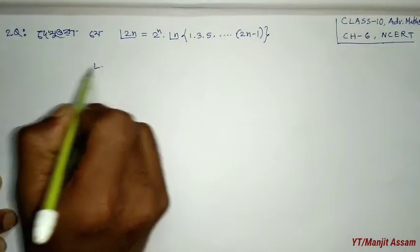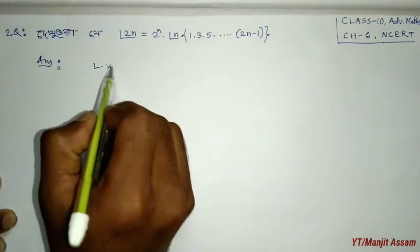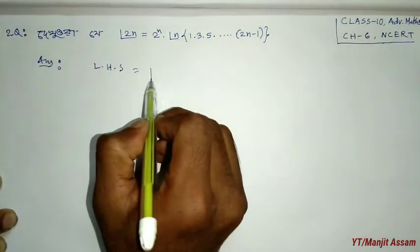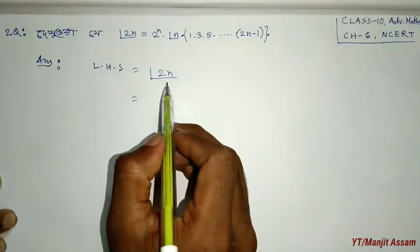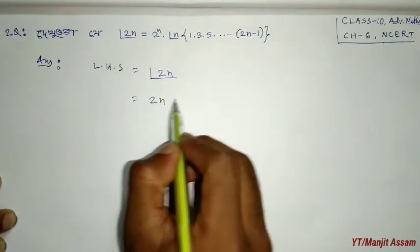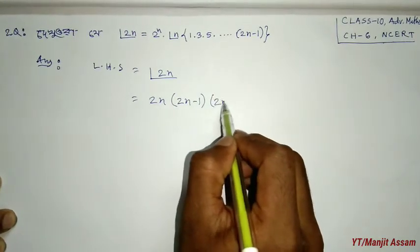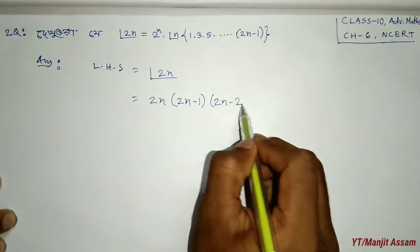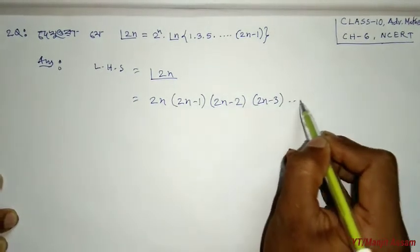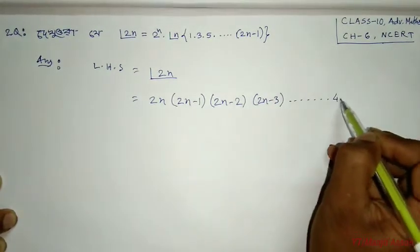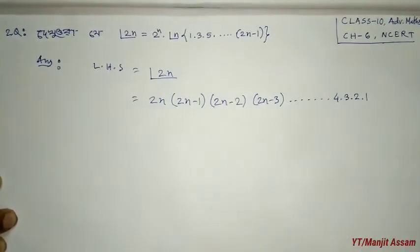Starting with the left hand side: LHS equals factorial 2n. We expand factorial 2n as: 2n into (2n minus 1) into (2n minus 2) into (2n minus 3) dot dot dot into 4 into 3 into 2 into 1.